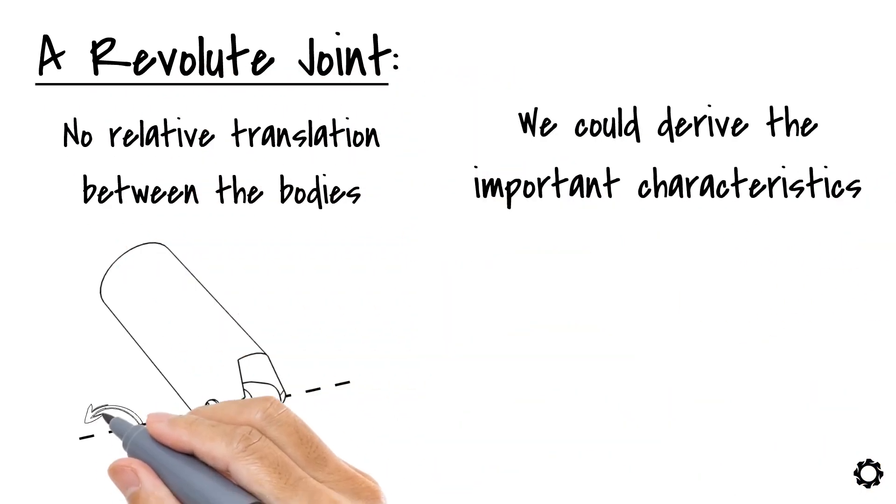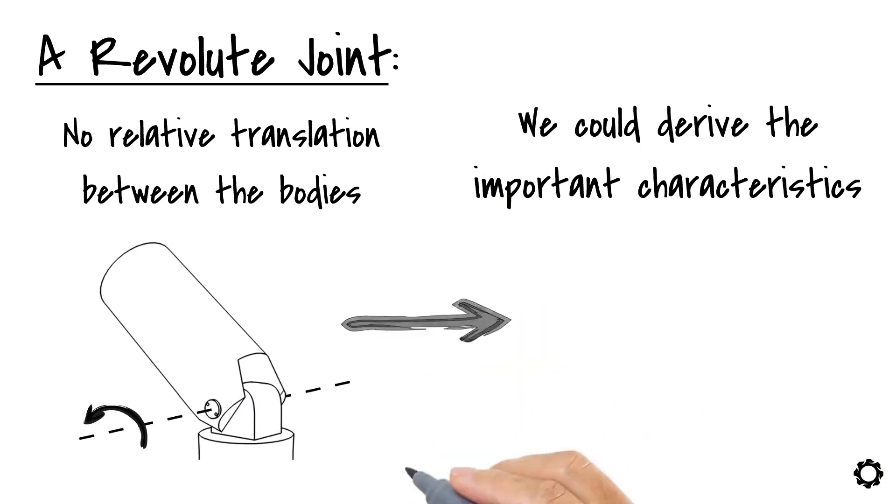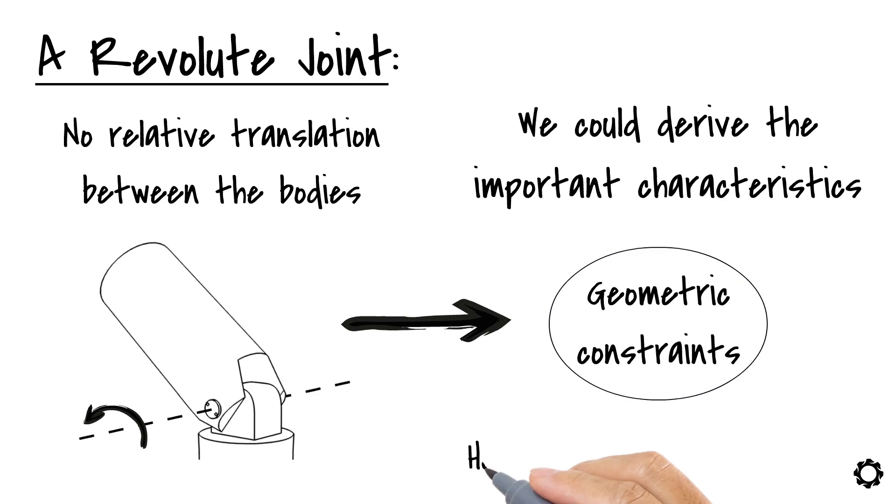The fact that it is rotating about a point sets this joint under the category of geometric constraints. Let's bring a couple of bodies to see how to mathematically write a revolute joint.